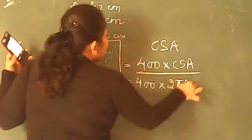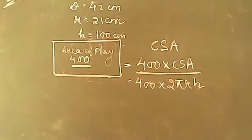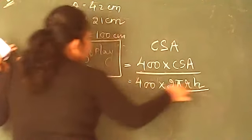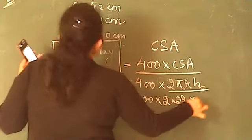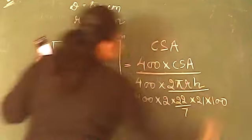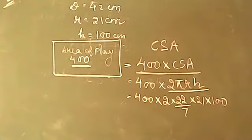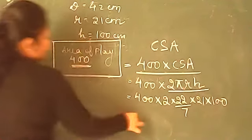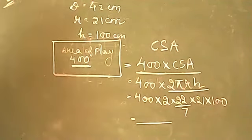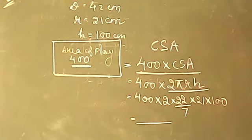CSA = 2πrh = 2 × 22/7 × 21 × 100. So area of playground = 400 × 2 × 22/7 × 21 × 100. Cancel where possible and solve. Whatever answer comes will be in centimeter square because every unit given was in centimeters. After getting cm², you need to convert to meter square.